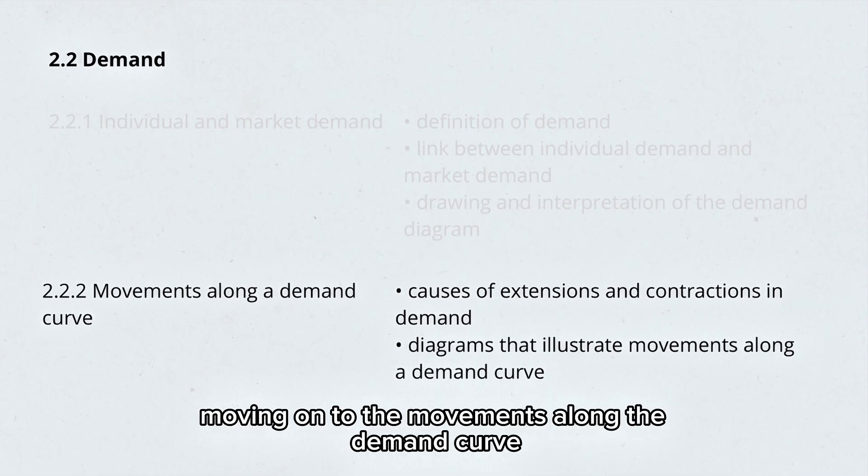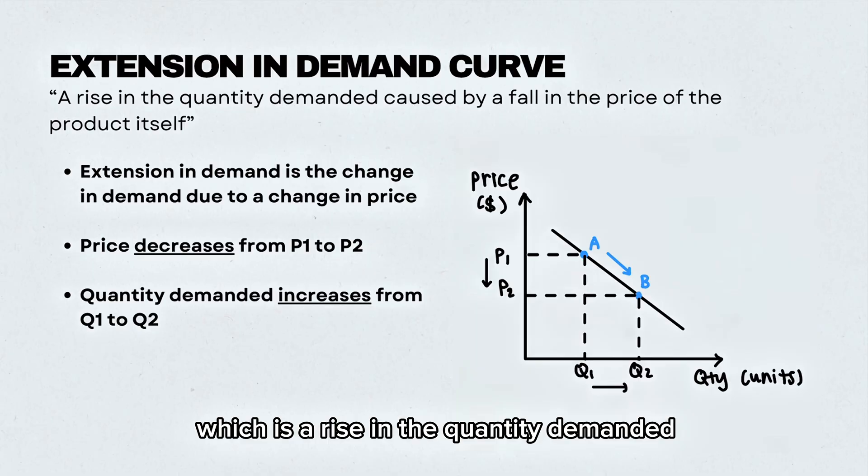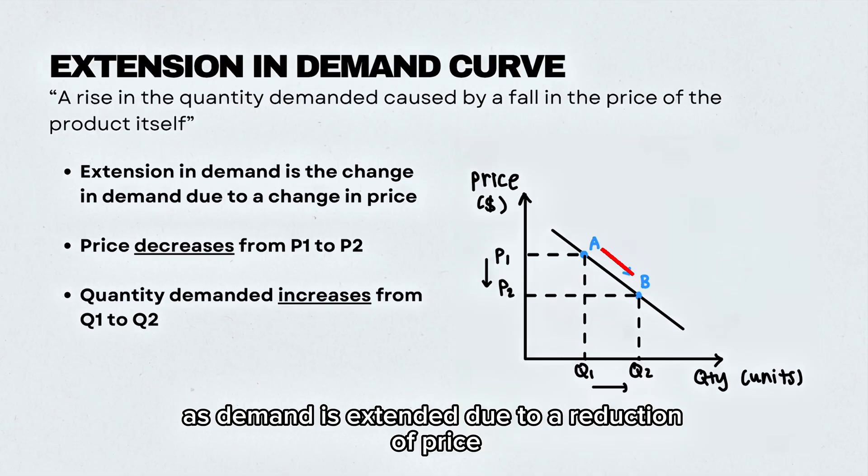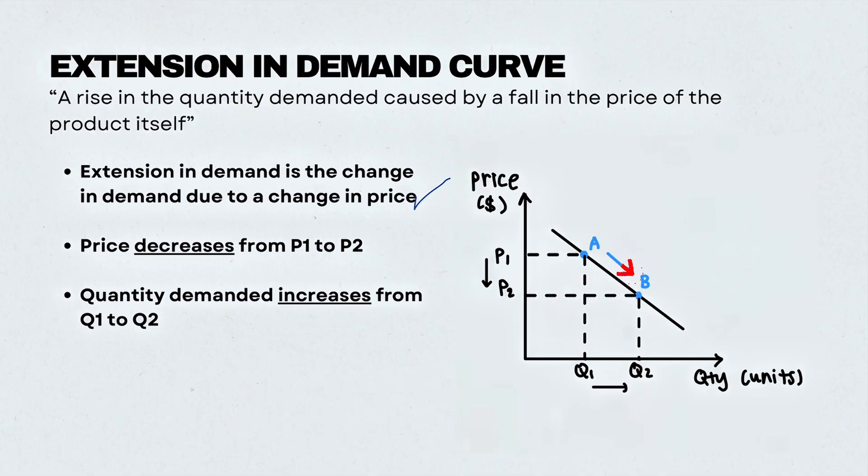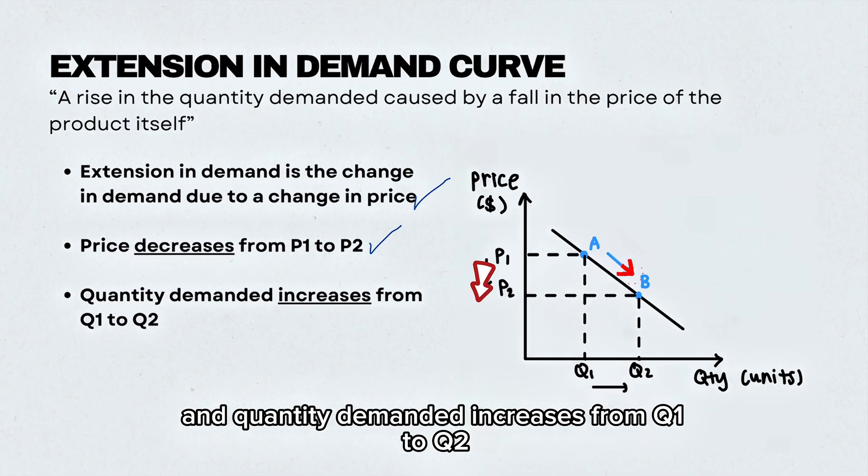Moving on to the movements along the demand curve. This is an extension of the demand curve, which is a rise in the quantity demanded caused by a fall in the price of the product itself. Demand is extended due to a reduction of price. So price in this case decreases from P1 to P2, and quantity demanded increases from Q1 to Q2.